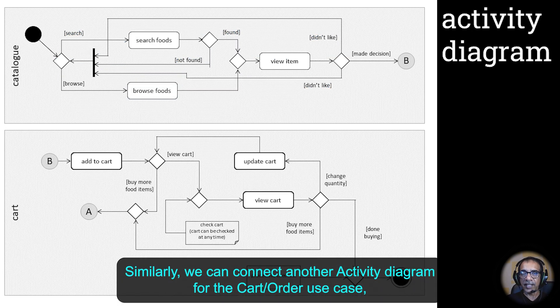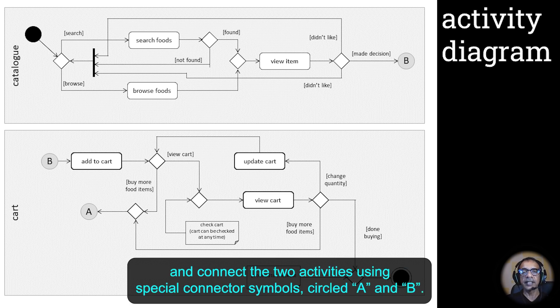Similarly, we can connect another activity diagram for the cart/order use case and connect the two activities using special connector symbols — circled A and circled B.